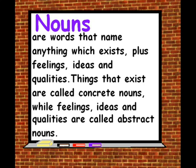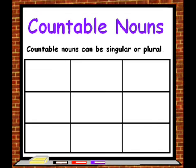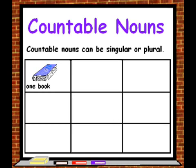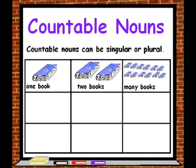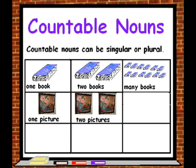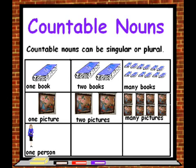Let's now look at countable nouns. Countable nouns can be singular or plural. We can count how many we have of these items. For example, we can have a book, or two books, or many books. Or we could have a picture, or two pictures, or many pictures. Or a person, two people, or many people.